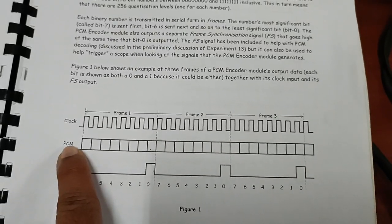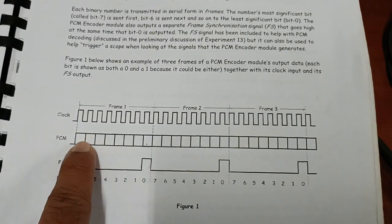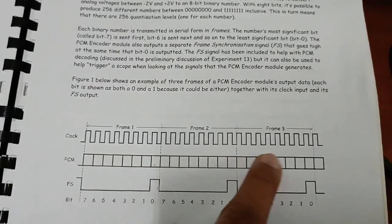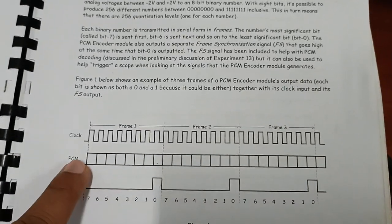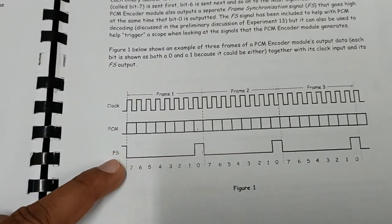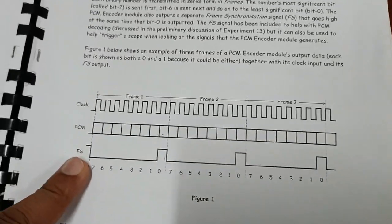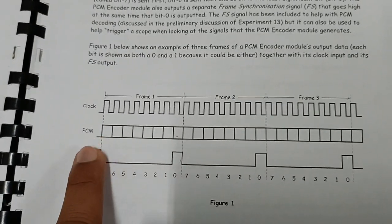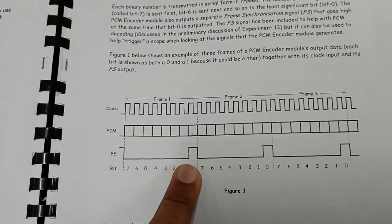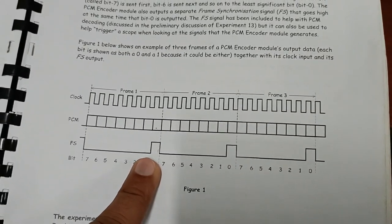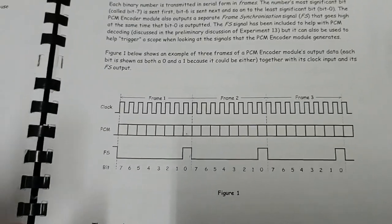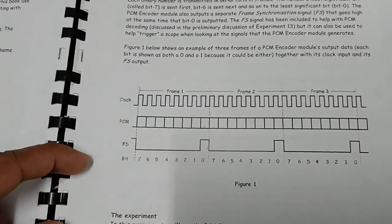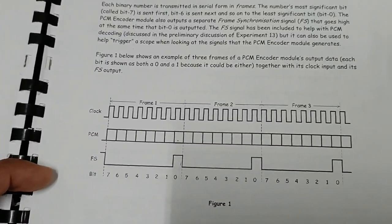As you can see, the first signal is the clock, which is the 8 kHz digital signal. The second one is the PCM data, which is a series of 0s and 1s. The third one is the frame synchronization signal — you can see bits labeled 7, 6, 5, 4, 3, 2, 1, 0 — it is basically an 8-bit synchronizer, meaning we are using an 8-bit PCM encoder.